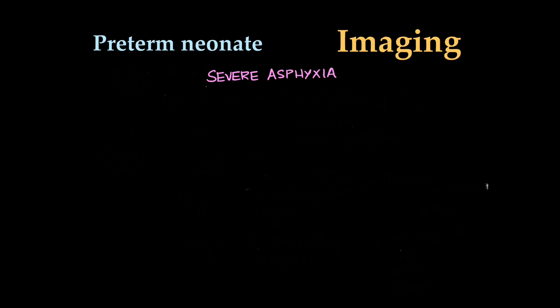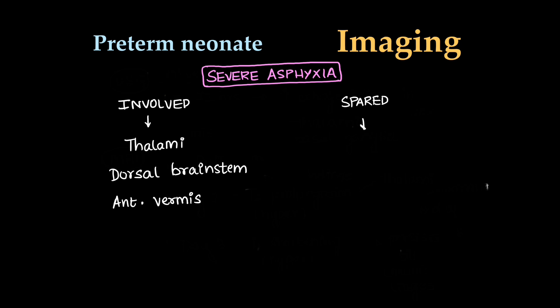We are done with term neonate. Now, the preterm neonate born before 36 weeks. When severe asphyxia occurs, the areas involved are again thalamus, dorsal brainstem, anterior vermis. What areas are spared? Areas like perirolandic cortex and basal ganglia are usually spared because they show late myelination. In term neonate, they are myelinating, hence they are damaged. In preterm, they are not myelinating yet, so they are less likely to be damaged.